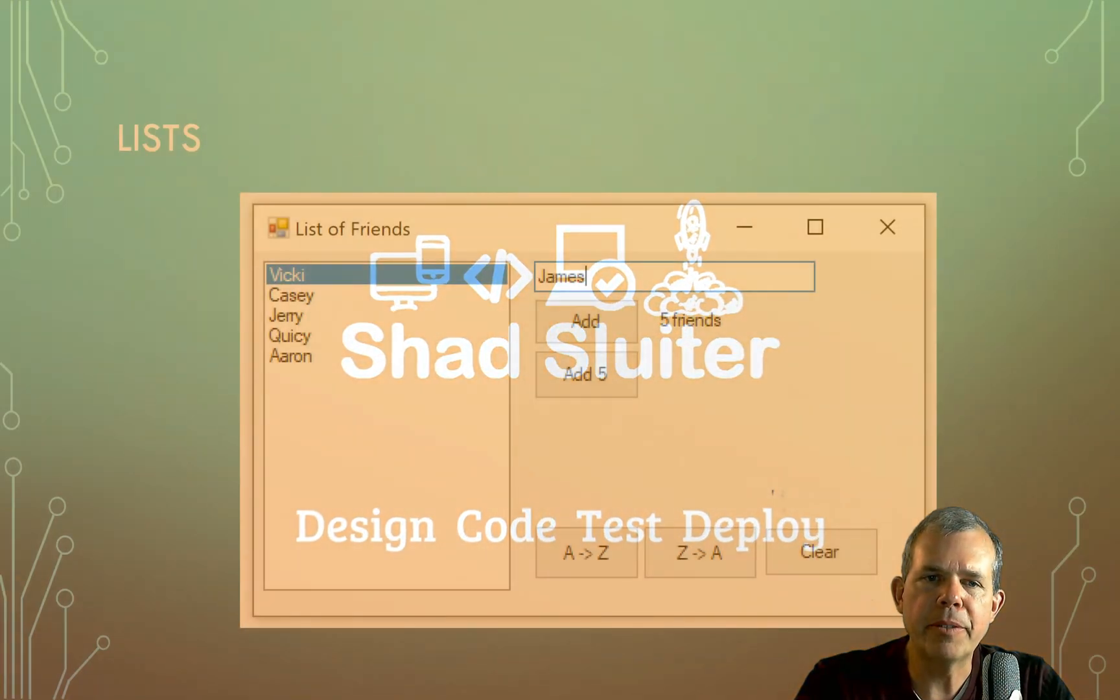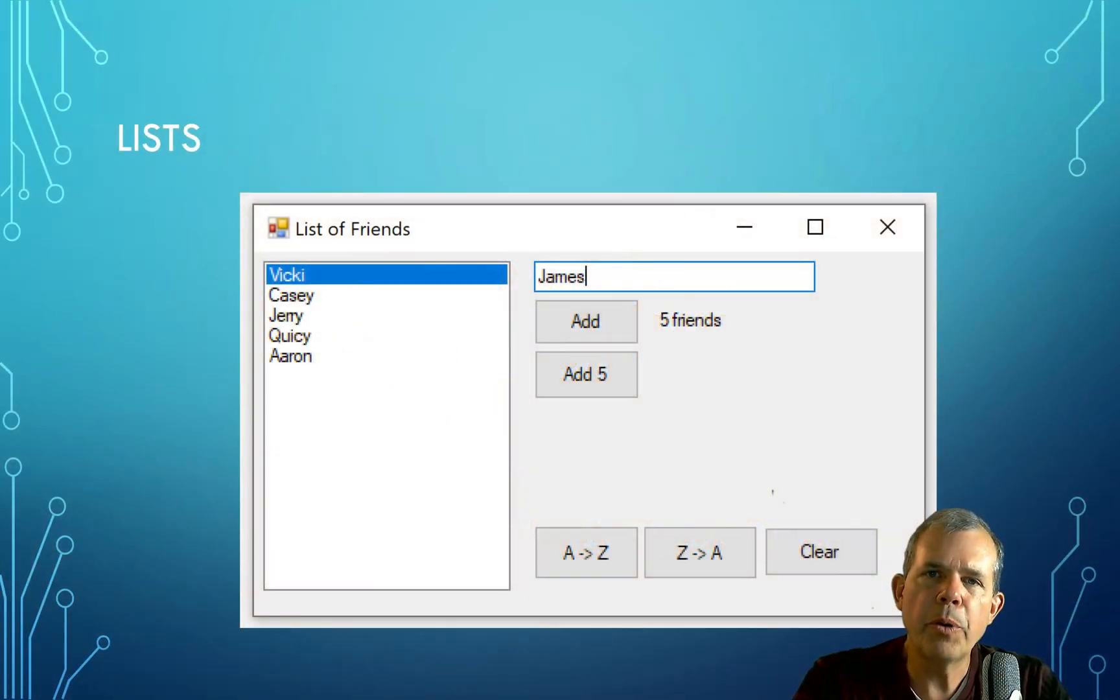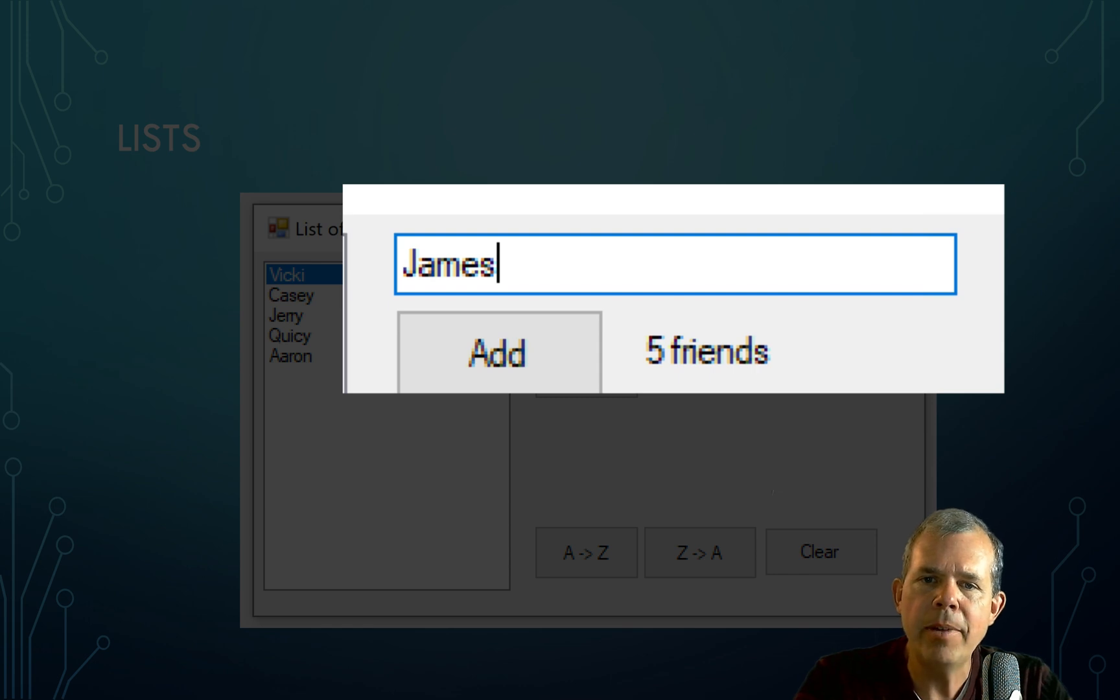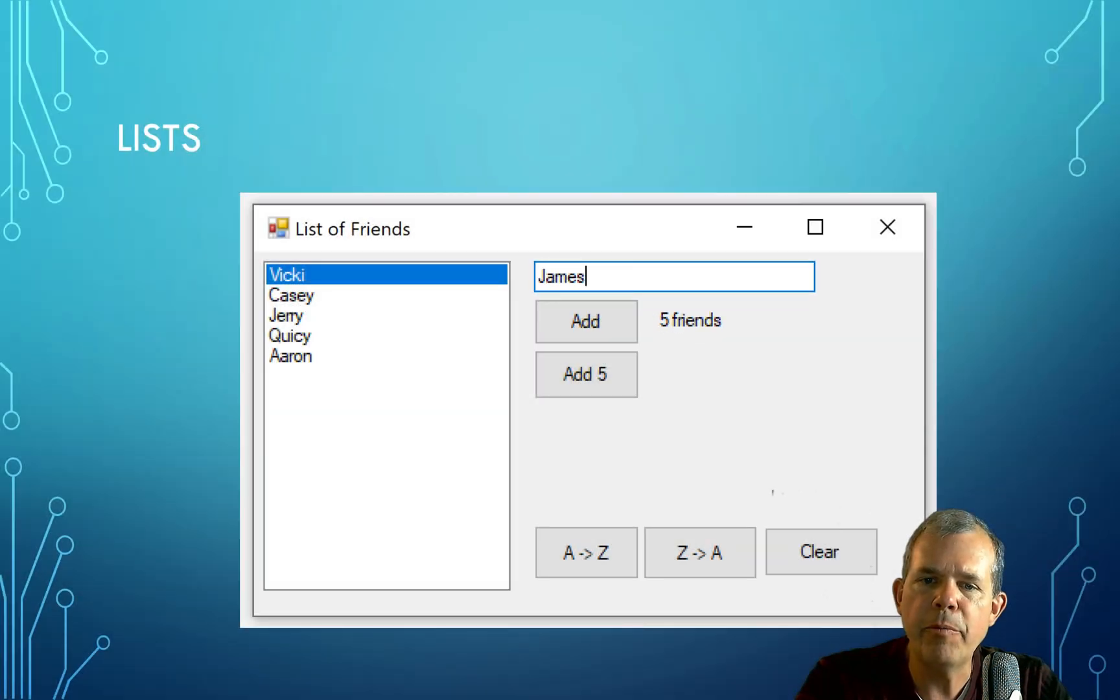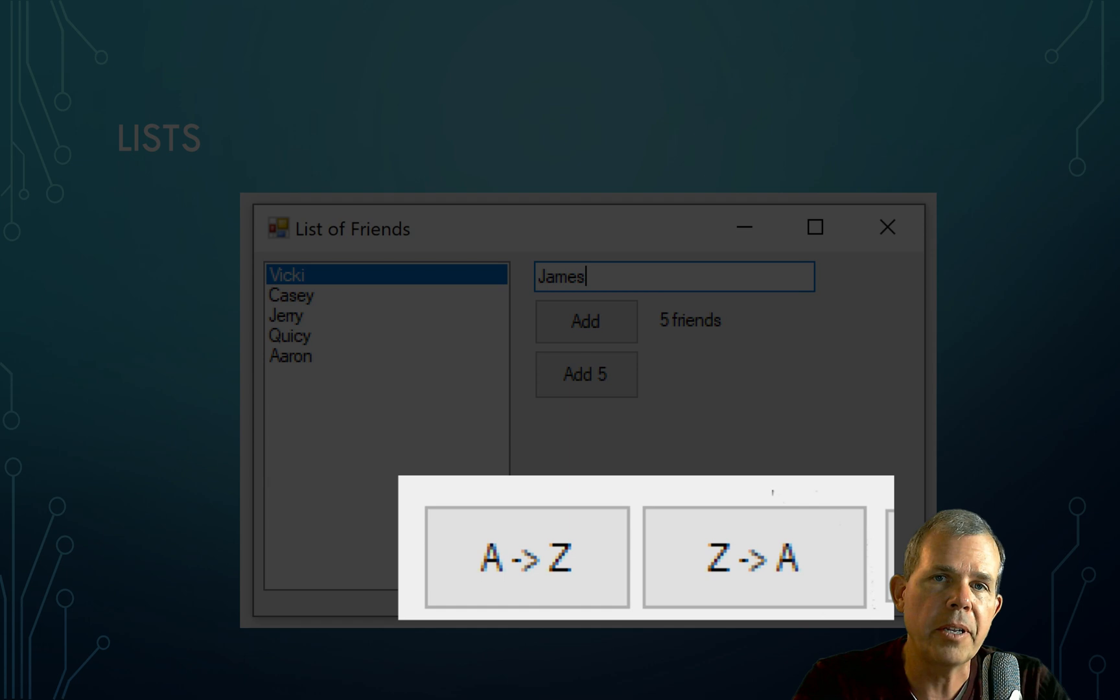So let's look at some of the upcoming examples of things that we're going to make. First of all, we're going to make a program called List of Friends. It's pretty simple. We're going to add a list by putting in a name, and then choosing the Add button. And we can sort the list, too, so we can sort it in descending order and ascending order.